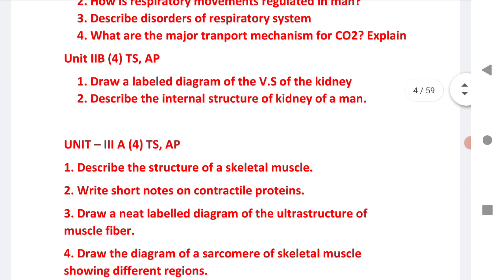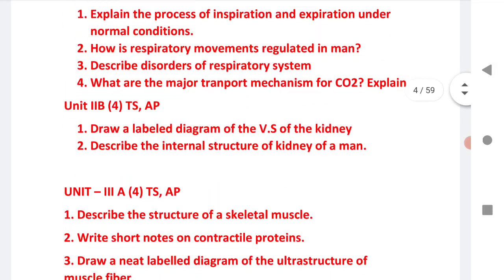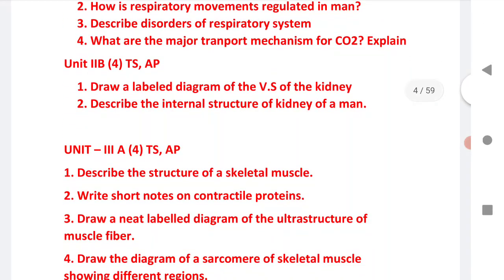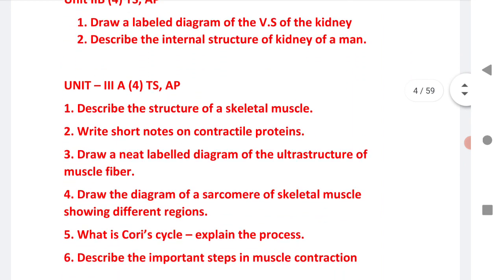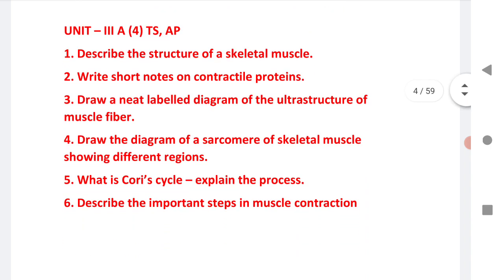Unit 2B: the first question is from Unit 1B, second is from Unit 2B — 4 marks for both the states. Two very important questions are given here. Next is Unit 3, 4 marks for both states: describe the structure of skeletal muscle, write a note on contractile proteins, and label the ultra structure of muscle fiber — very important questions. Six very important questions are given here.